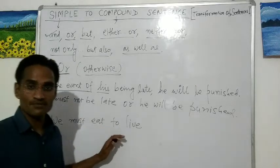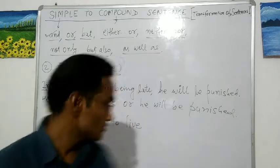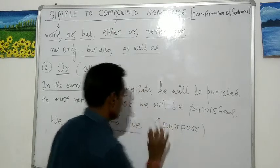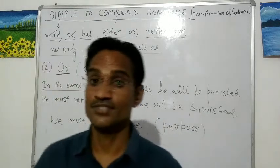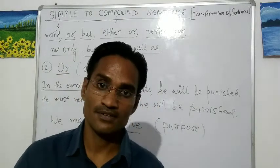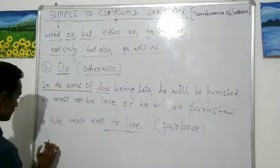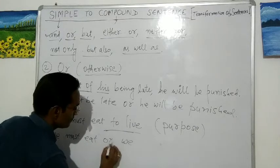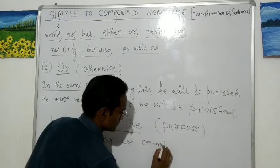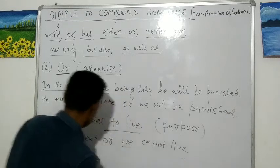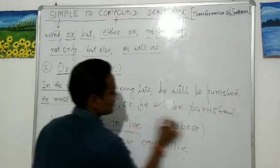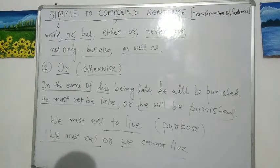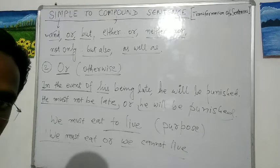'We must eat to live' — here 'to live' expresses purpose. Why do we eat? We eat to live. So this becomes: 'We must eat or we cannot live.' These are the ways to use 'or' while transforming a simple sentence into a compound one.